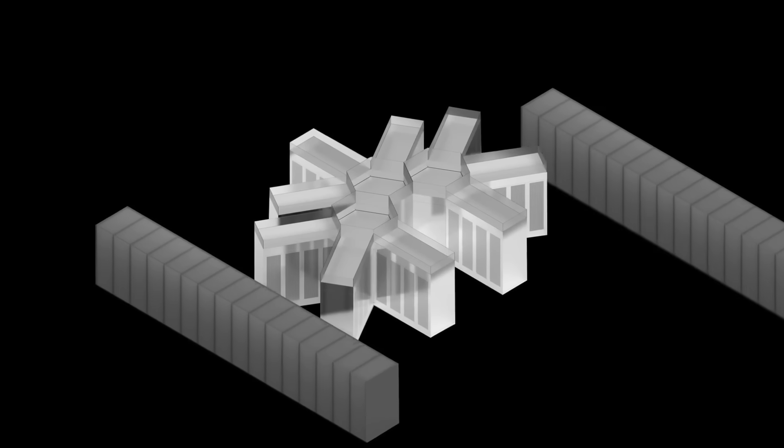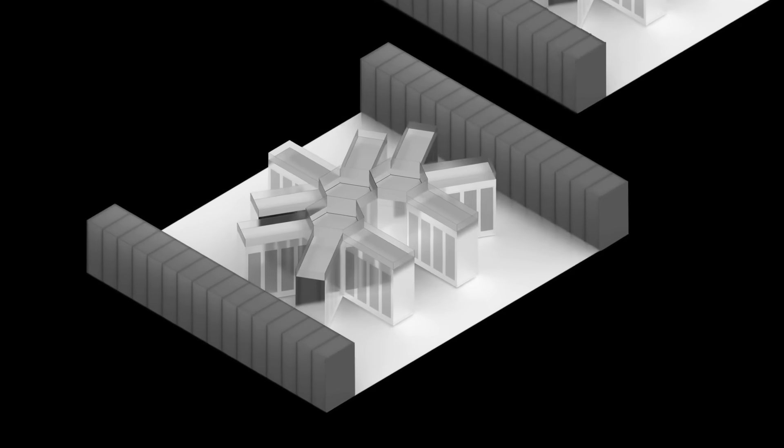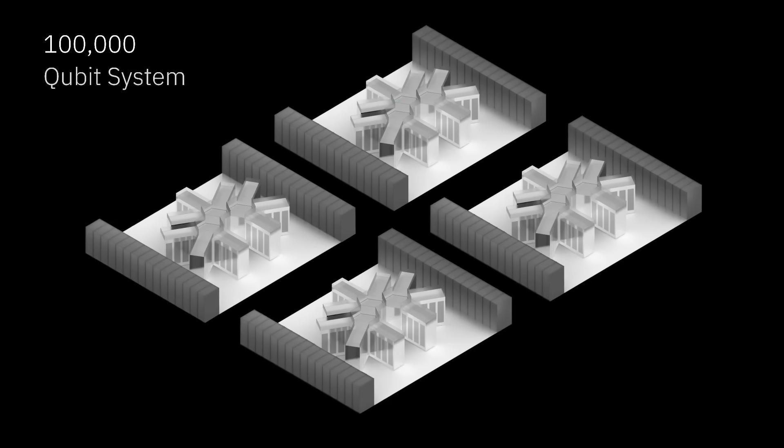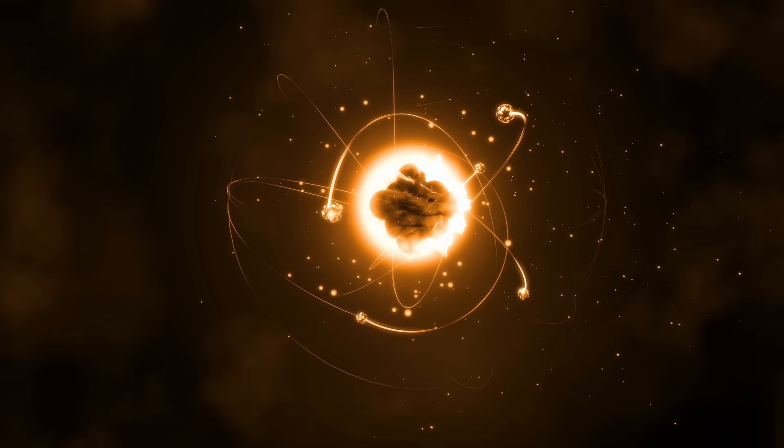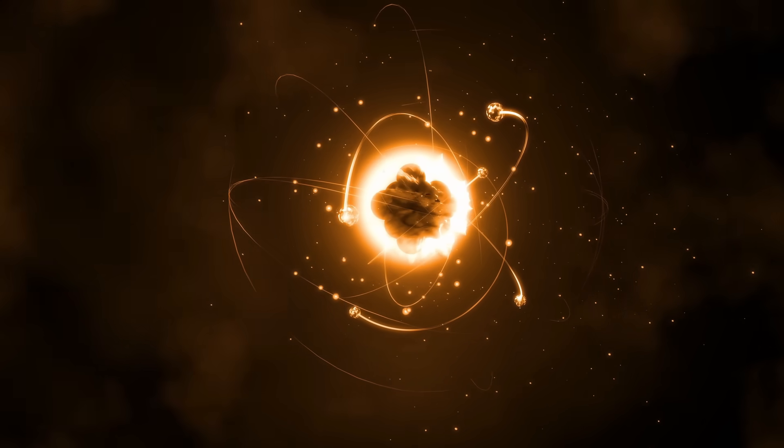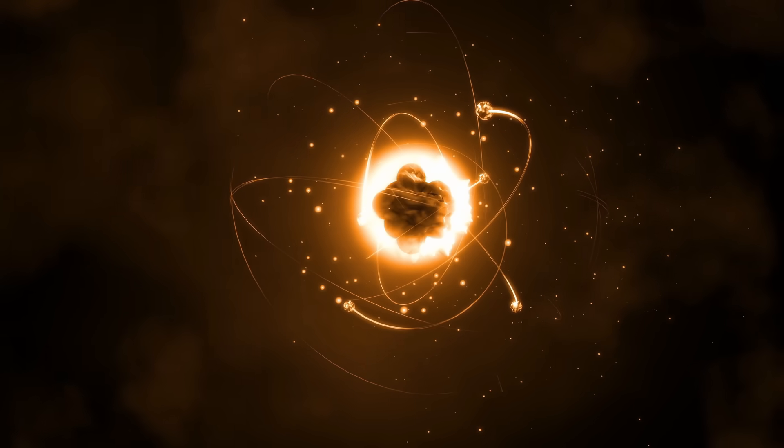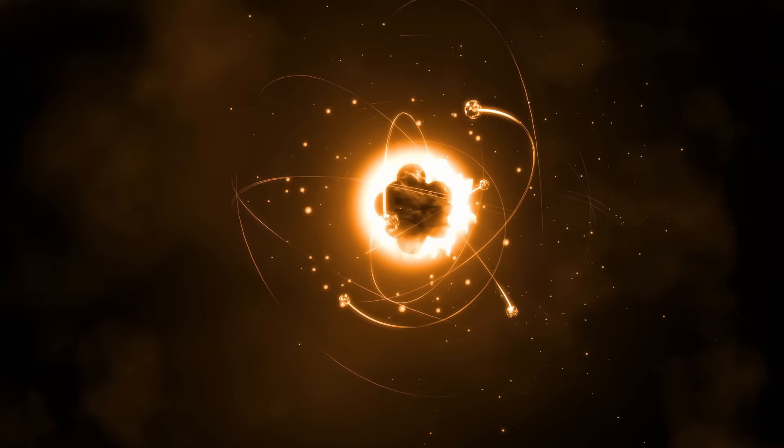If you're familiar with quantum computing, you've likely heard of qubits. A qubit, or quantum bit, is the fundamental unit of information in quantum computing. Qubits are created by manipulating quantum particles like electrons, photons, trapped ions, superconducting circuits, or atoms.